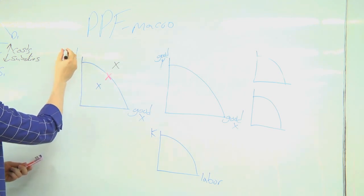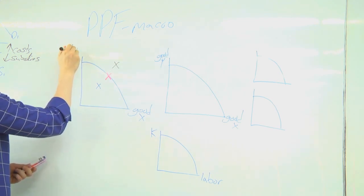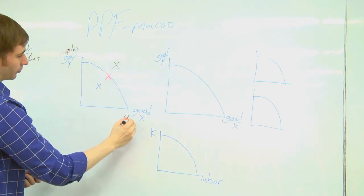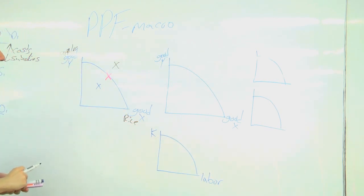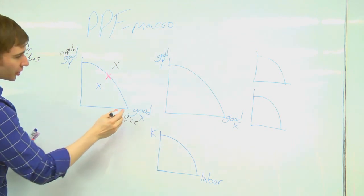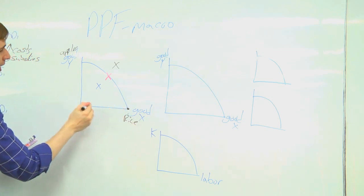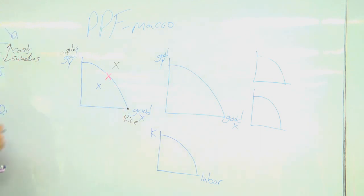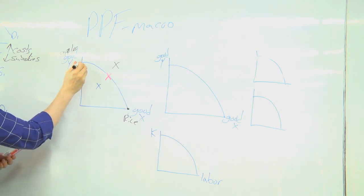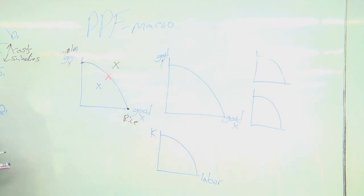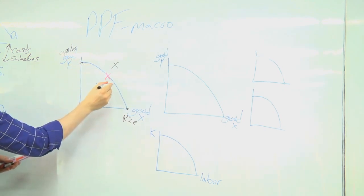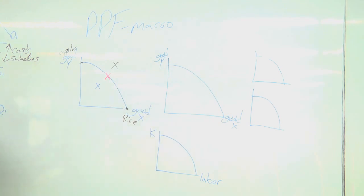Maybe this is apples and this is rice. What this says is if you spend all of your resources you can make this much rice but zero apples. Or if you spend all of your resources on making apples, you'd be able to make this many apples but zero rice. Or you can make some combination of the two goods.